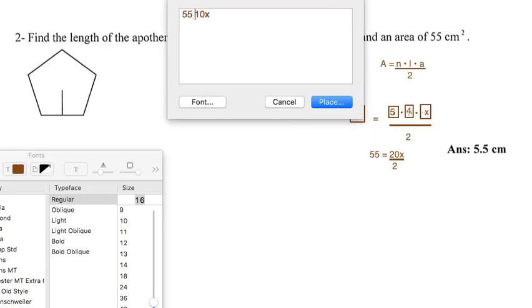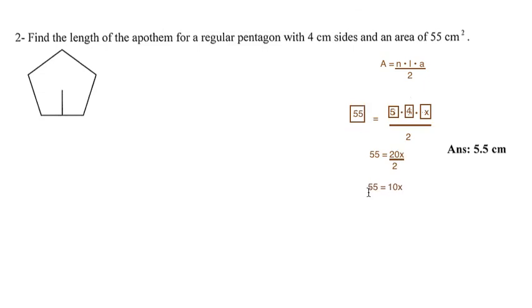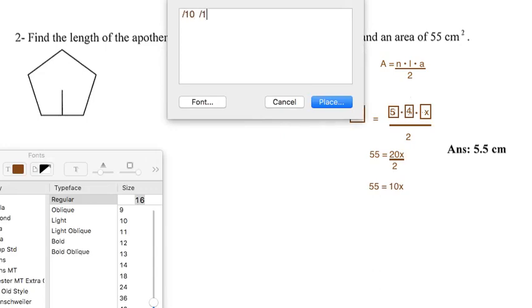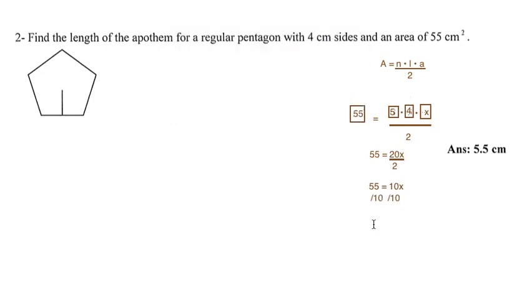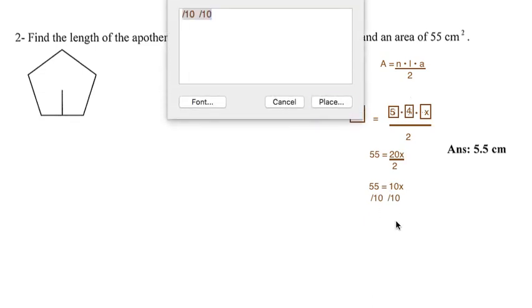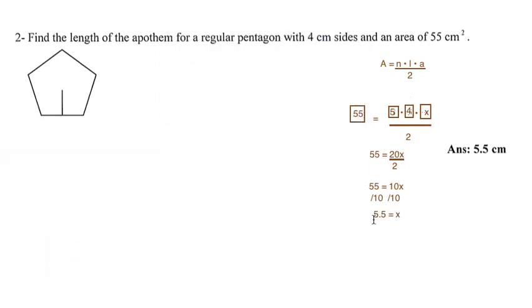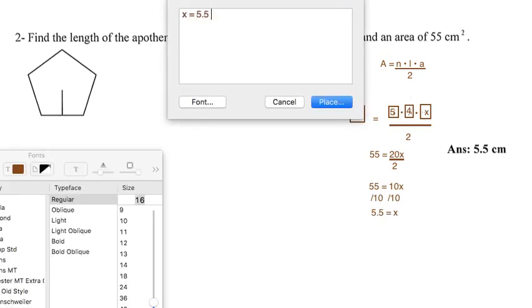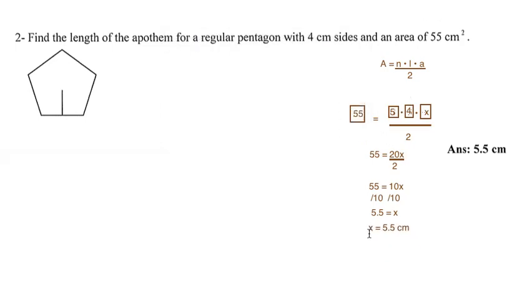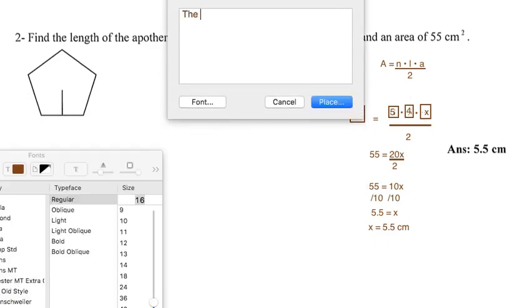If you want to get X alone, just divide both sides by 10. 10X divided by 10 gives you X. On the other side, 55 divided by 10 gives you 5.5. So X equals 5.5. Since we're dealing with the length of the apothem, the units are centimeters. The answer is that the apothem is 5.5 centimeters long.